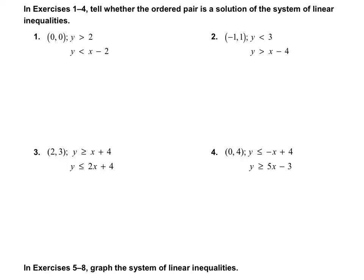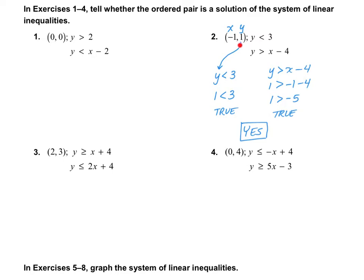Here's how we solve it. We're going to take the point — I'll do number 2. So this is x and this is y. I'm going to substitute x and y into both inequalities. The first one is y is less than 3, so 1 is less than 3 — that is true. Now for the next inequality, y is greater than x minus 4: 1 is greater than negative 1 minus 4, so 1 is greater than negative 5 — also true. Since it's true for both inequalities, the answer is yes. This point (-1, 1) is a solution for this system of linear inequalities.